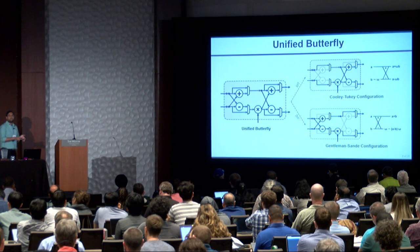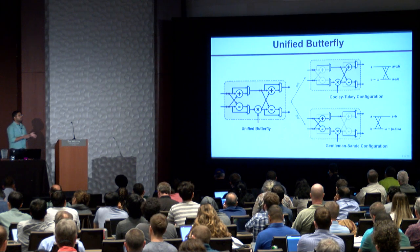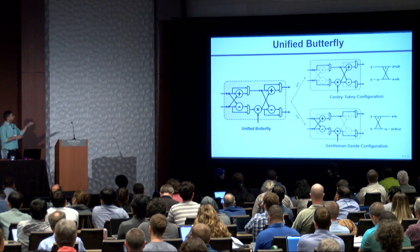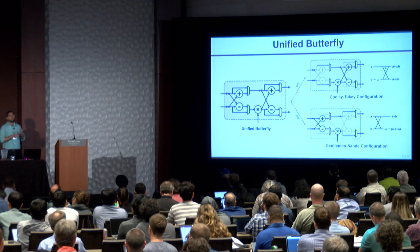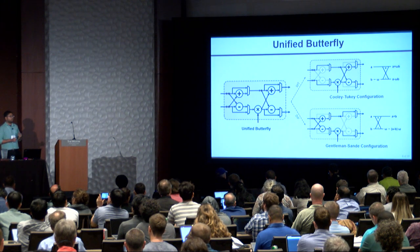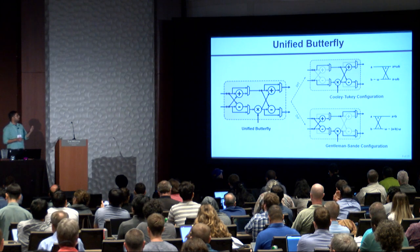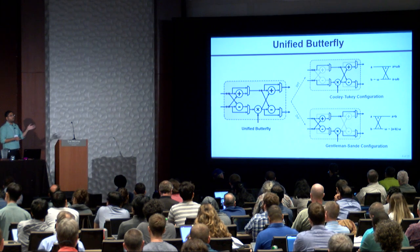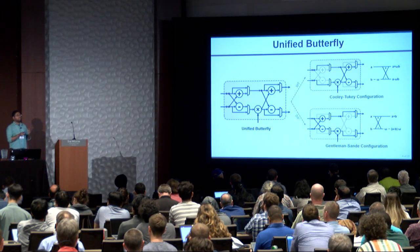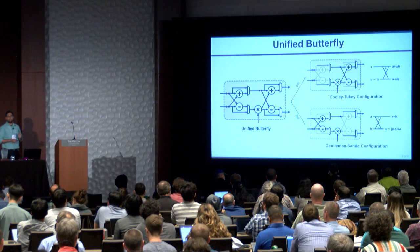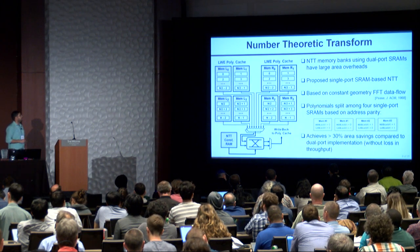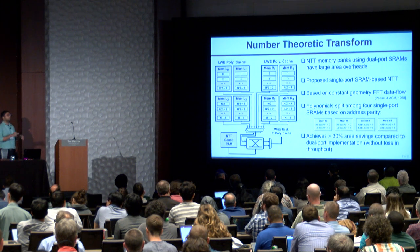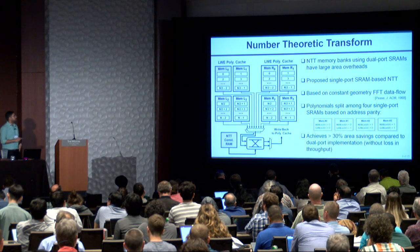This modular multiplier is part of a butterfly unit used to accelerate NTT computations. The multiplier, adder, and subtractor inside the butterfly are all reused for other polynomial arithmetic operations. To provide further flexibility and eliminate the need for expensive bit reversals, our butterfly unit can be used both in the Cooley-Tukey and the Gentleman-Sande configuration.